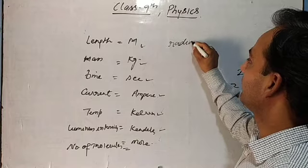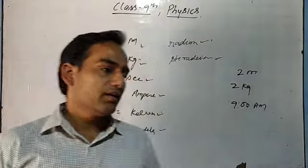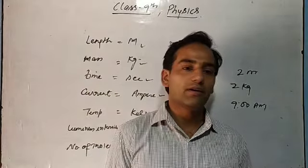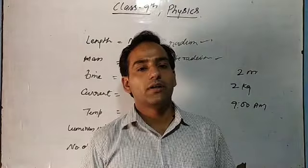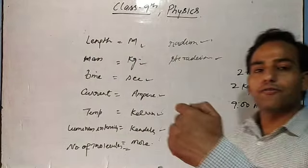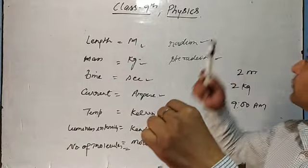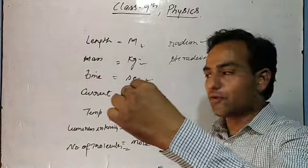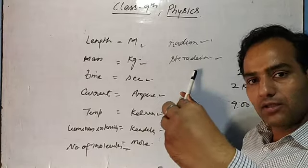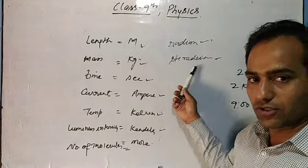Radian is used to measure angles. For steradian — imagine this board with four corners. If we measure the angles from a central point to each of the four corners, we get four angles. This combined solid angle is what we call steradian. It is called a solid angle because from one point we have measured four angles, and the unit for this solid angle is steradian.